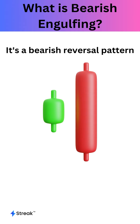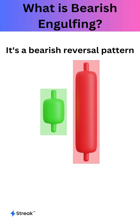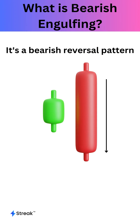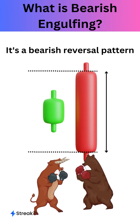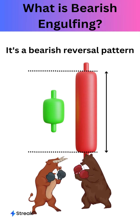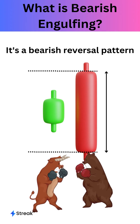It consists of two candles. The first one is a green candle and represents a bullish day. The second one is a red candle and represents a bearish day. The red candle is larger than the green one and covers it completely, or engulfs it. This means that the sellers were stronger than the buyers and pushed the prices down significantly.